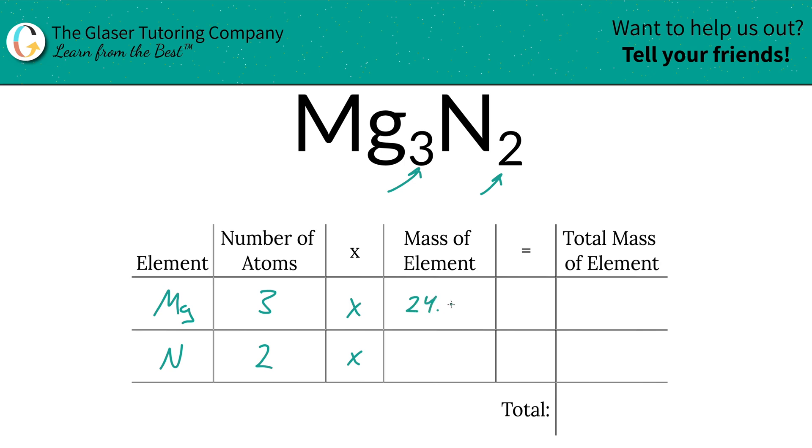So here we have 24.31 for magnesium, and nitrogen was 14.01. Then to find the total mass of the element, we simply have to multiply this row across. So there's going to be 72.93 units of mass for magnesium, and the nitrogen is going to be 28.02.